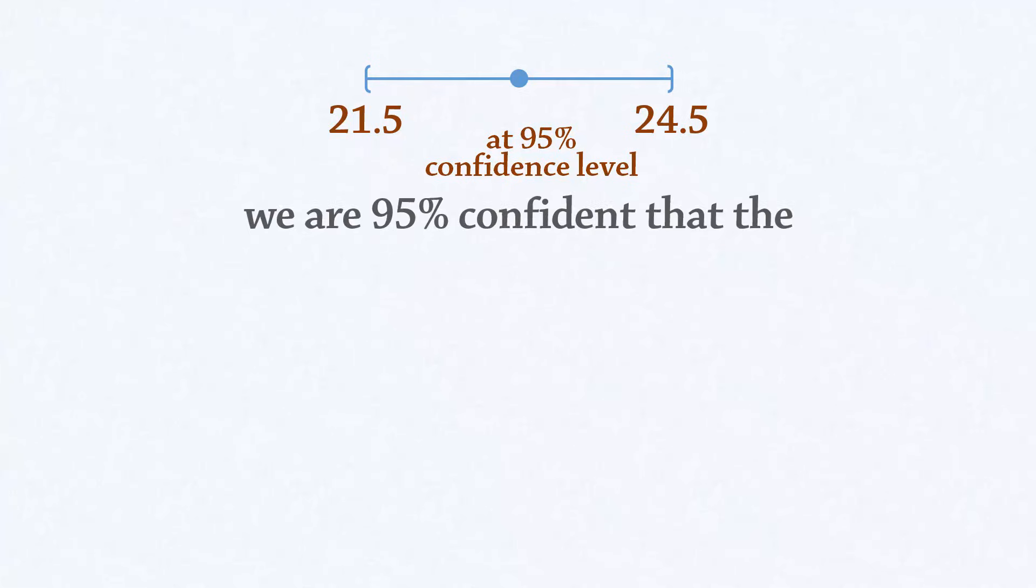Now suppose the interval 21.5 to 24.5 was obtained at the 95% confidence level. To interpret that we say, we are 95% confident that the true population mean lies between 21.5 and 24.5.